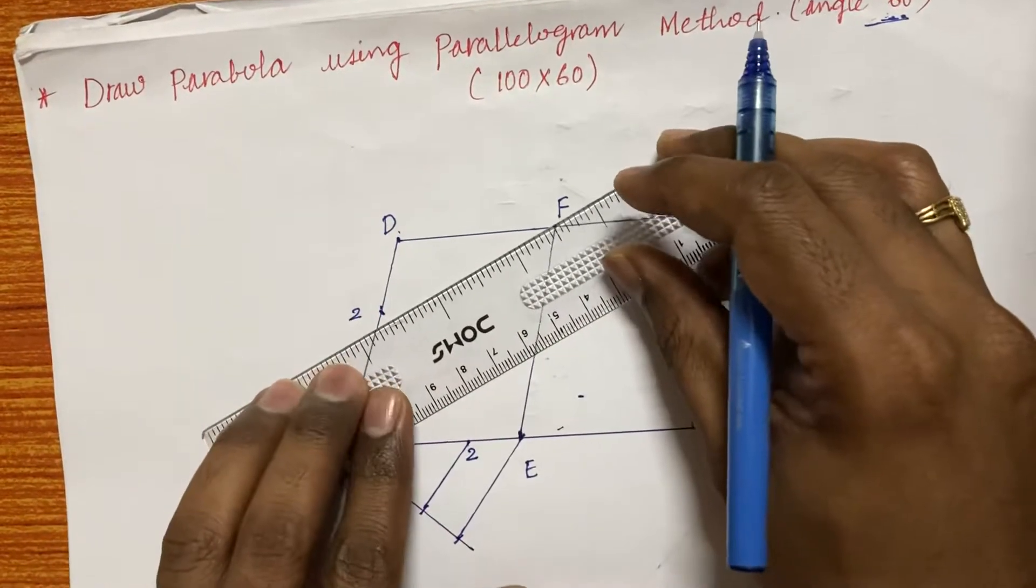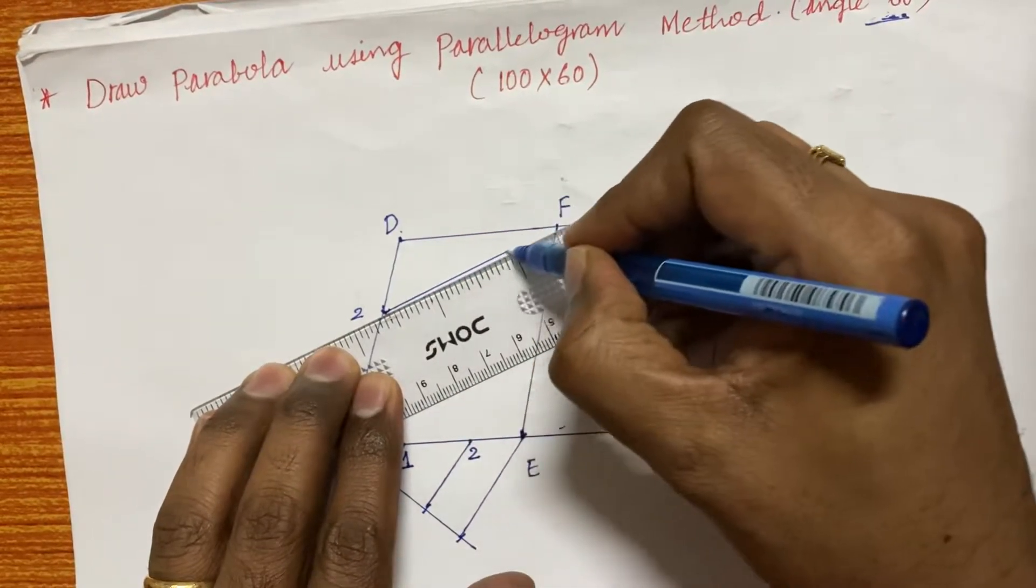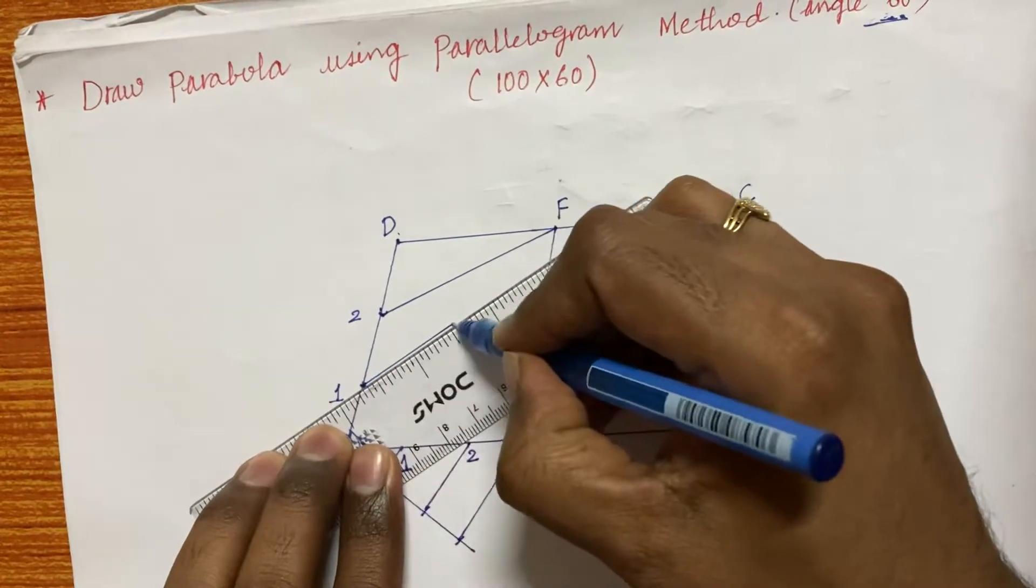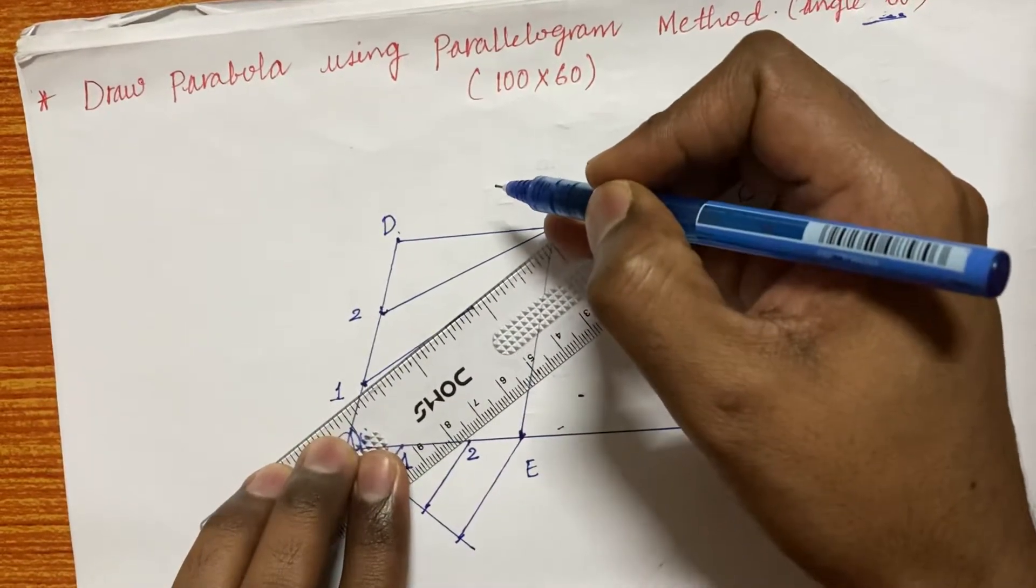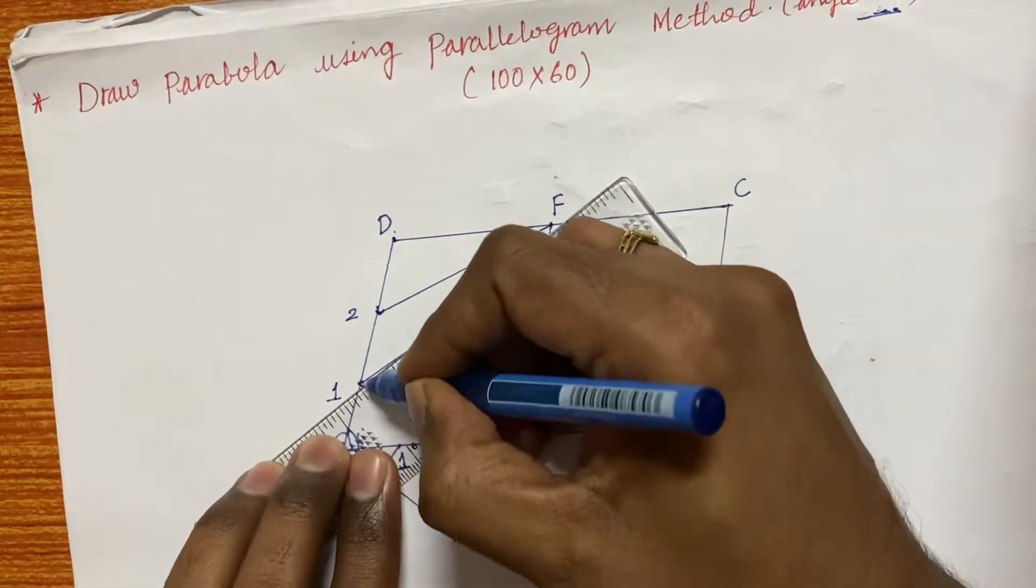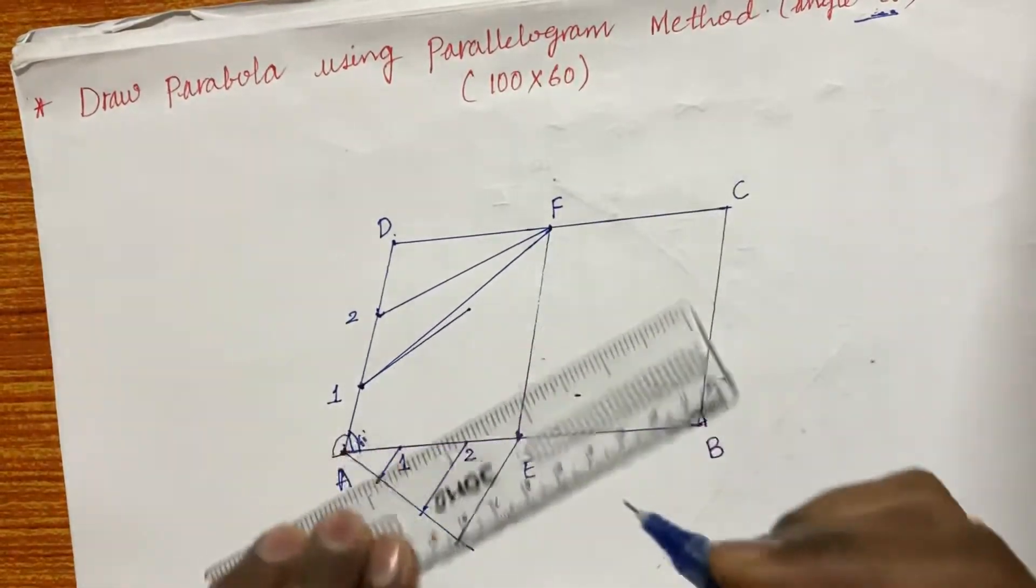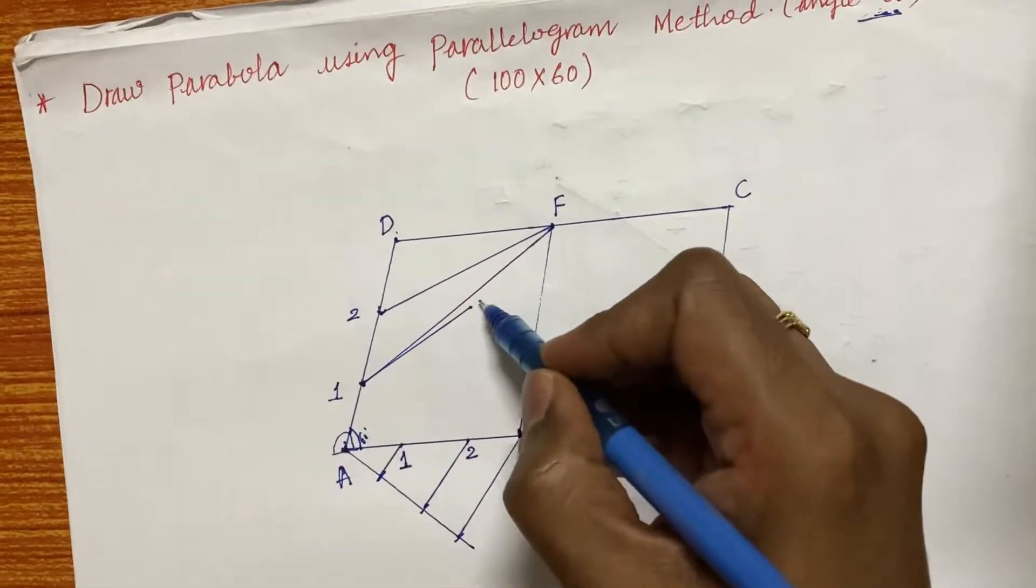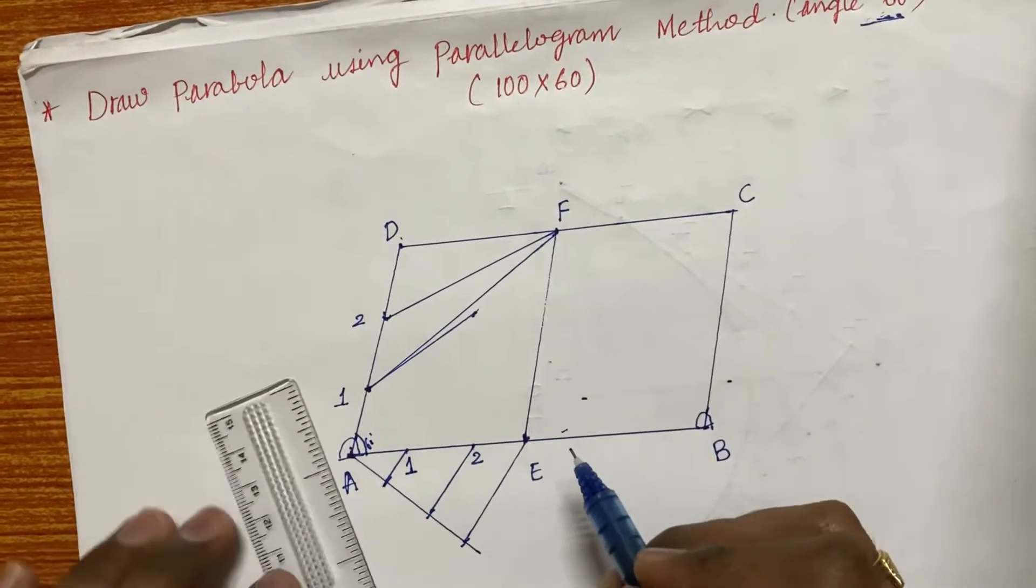Later, what you are supposed to do here is join this 2 to F, AE of line as well as even 1. Join this 1 also to this F line. You are going to join whatever the points located on AD. Try to join to F.